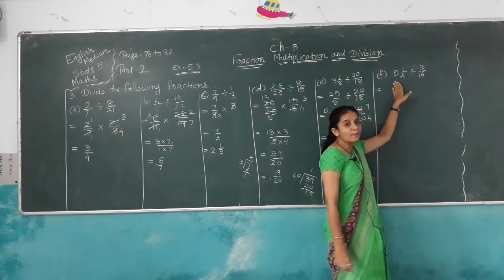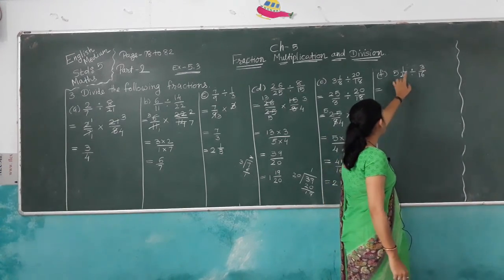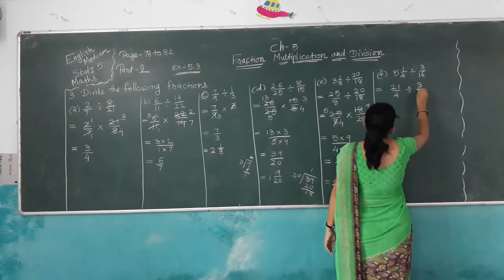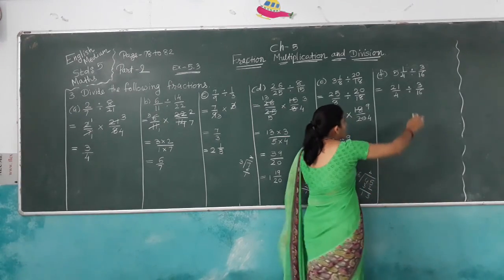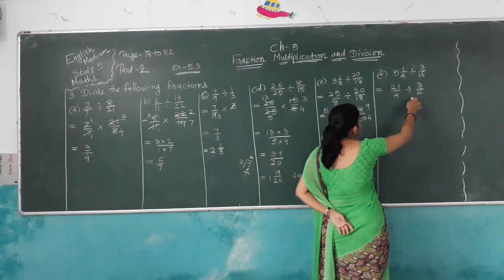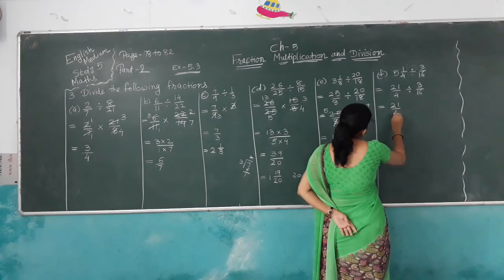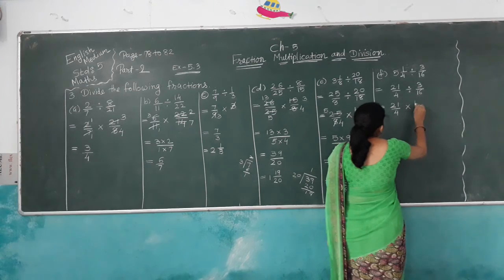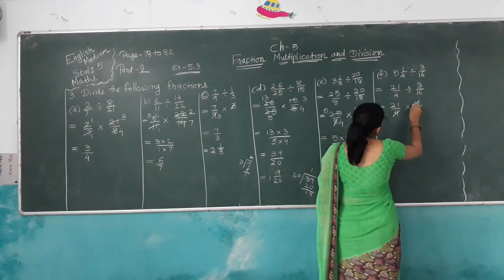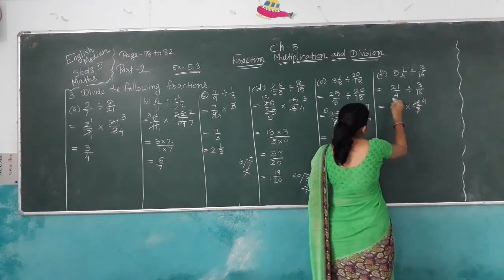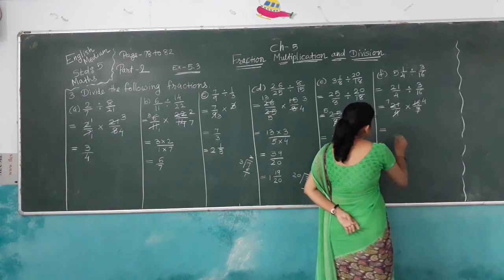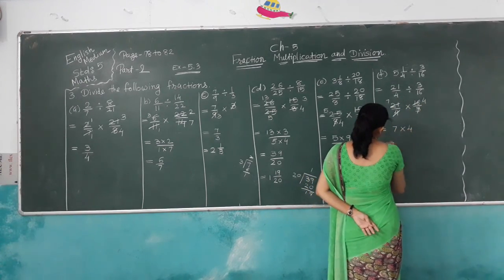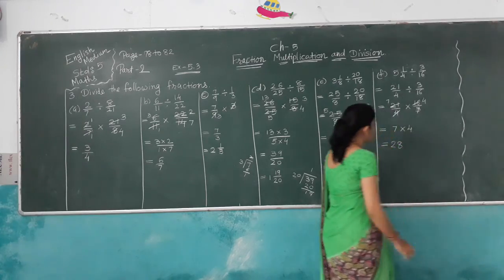Next: first convert the mixed fraction 5 and 1/4 to improper: (5×4)+1 = 21/4. Then 21/4 divided by 3/16. Multiply by reciprocal of 3/16, which is 16/3. Cancel: 4 goes into 16 giving 4, and 3 goes into 21 giving 7. So 7 multiplied by 4 equals 28. The answer is 28.